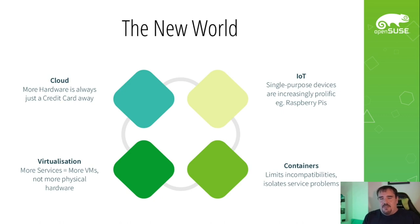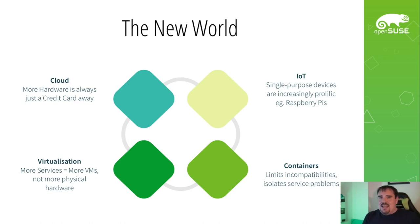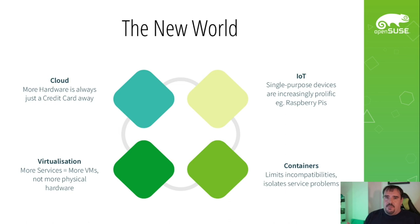My team has been looking at this and realizing that in many respects we're living in a new world where the cloud is ubiquitous. Everybody has cloud options now. If you need more hardware, a few more machines is just a credit card away. You've got all of these IoT devices, all with single purpose, all needing to have some way of being updated. Even in the traditional data center, virtualization is endemic — there are more services running in more VMs. When users need to add more services, they can add more VMs to their existing infrastructure. And of course there are containers, which help grease the wheels of this new world, providing sandboxing, limiting incompatibilities and isolating service problems — so if something does go wrong, it doesn't necessarily bring down other services unrelated to the misbehaving container.